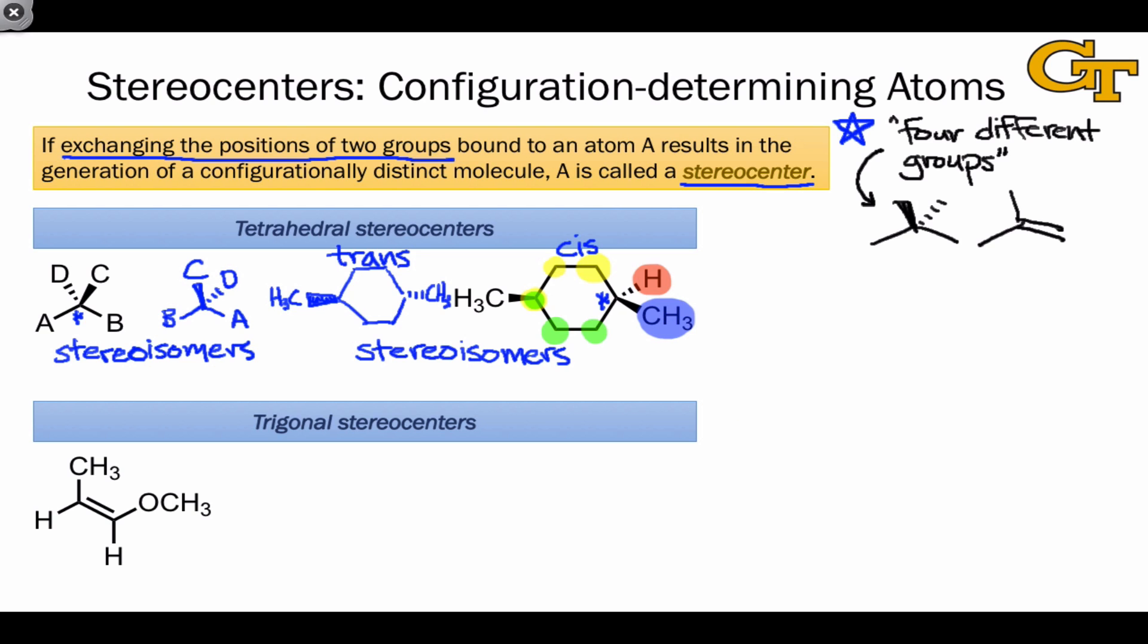Trigonal atoms that are part of alkenes or other groups can also serve as stereocenters. If I exchange the positions of the hydrogen and the CH3 at the starred carbon, the resulting molecule is not the same as the one I started with,